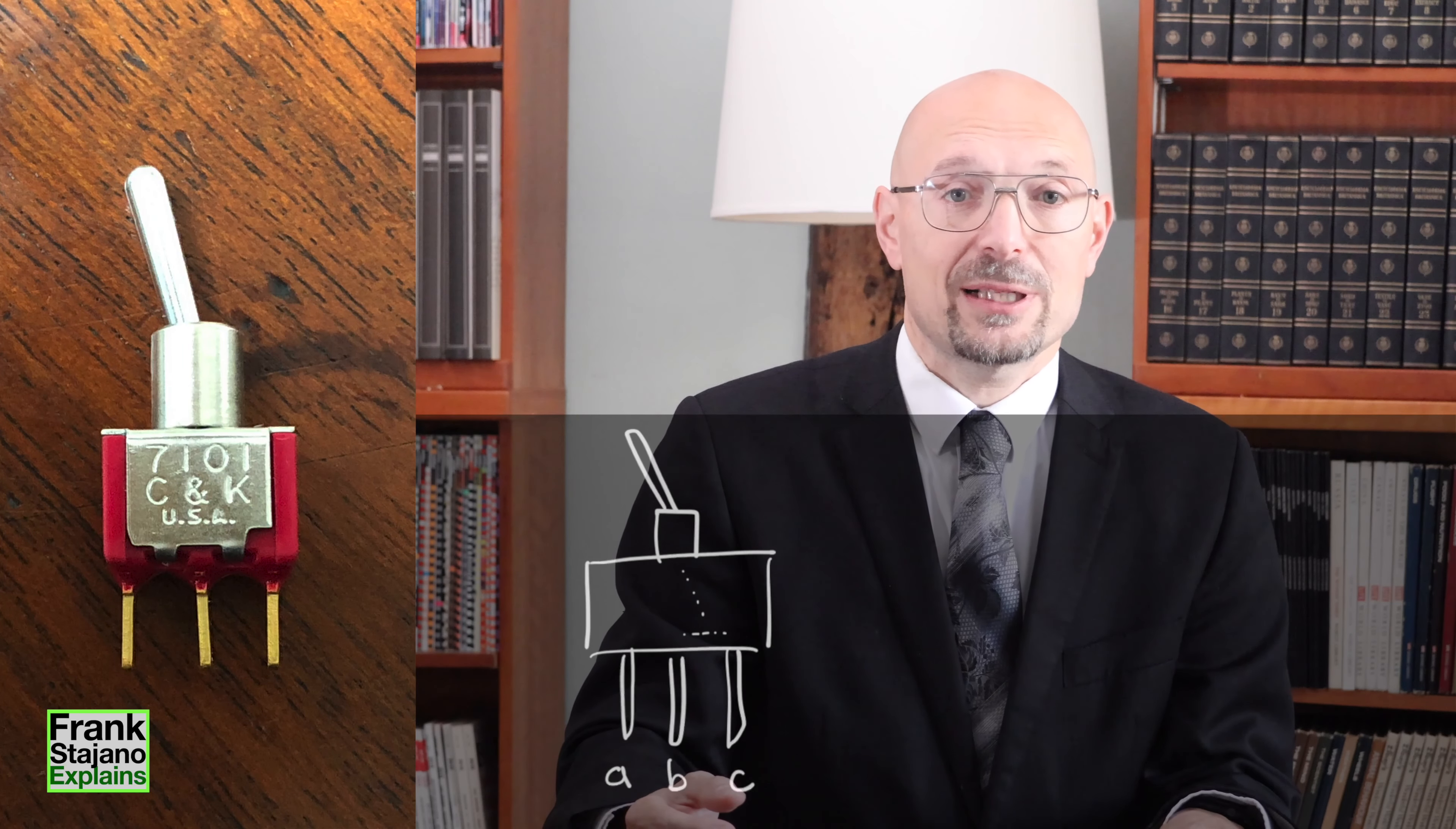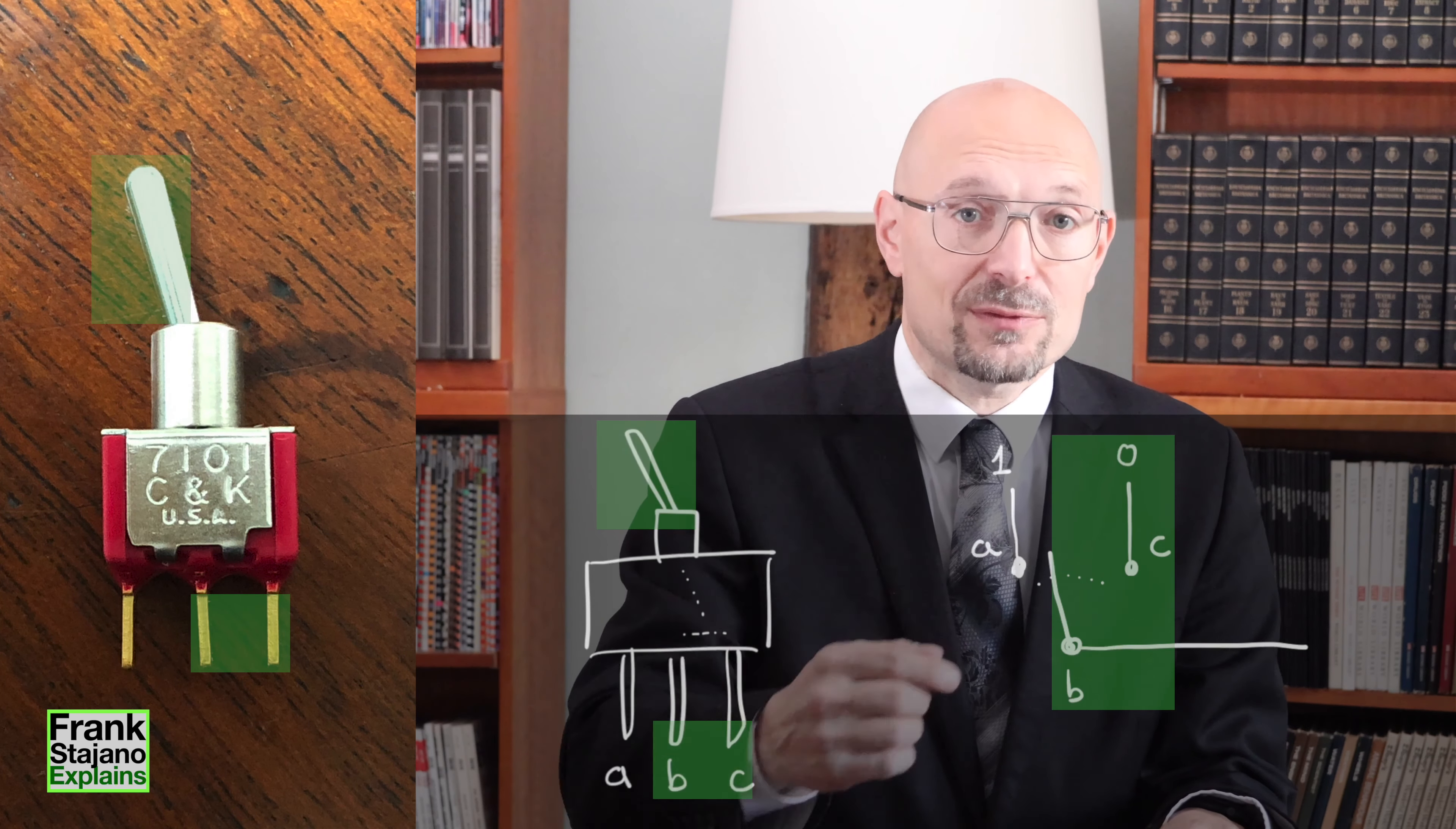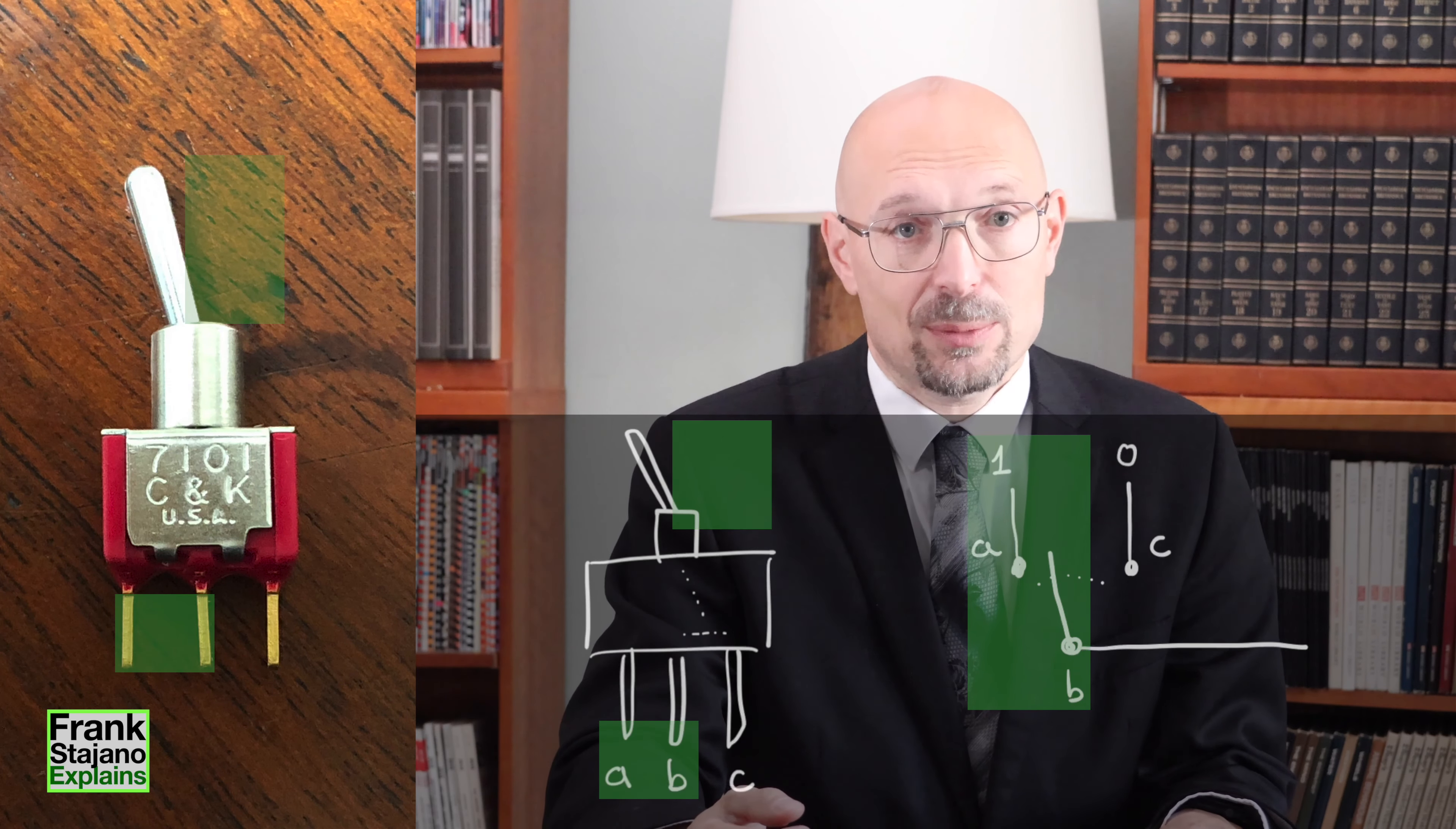Now, consider for a moment this other circuit made of a so-called single-pole double-throw switch. That is to say, a switch with three terminals that we might call A, B, and C, and with two stable positions. In the left position of the lever, the switch electrically connects or short-circuits the terminals B and C, whereas in the other position of the lever, it short-circuits A and B. Now, if I wire up terminal A to logic level 1 and terminal C to logic level 0, and I use terminal B as my output, then in the left position of the lever, the switch outputs 0, and in the right position of the lever, it outputs a 1.